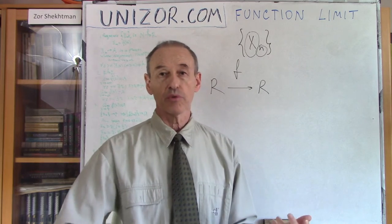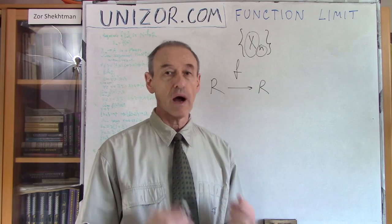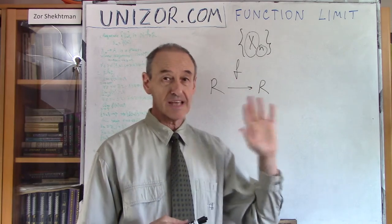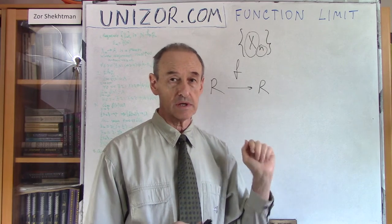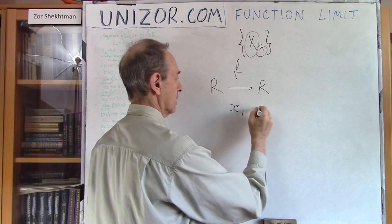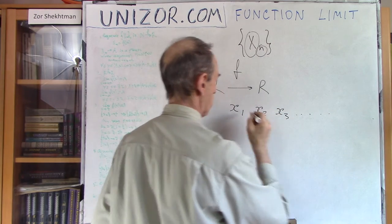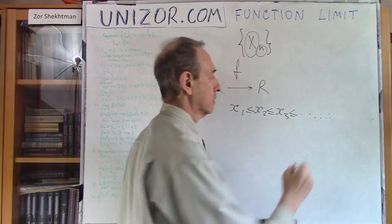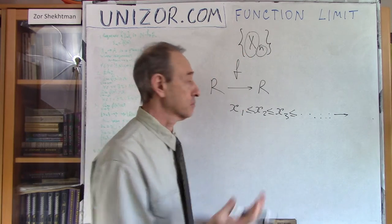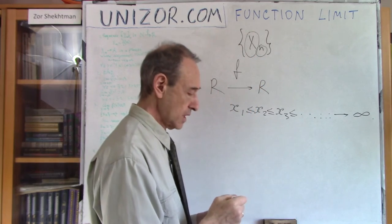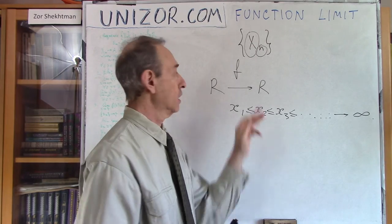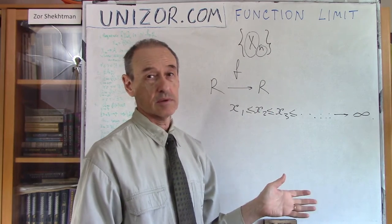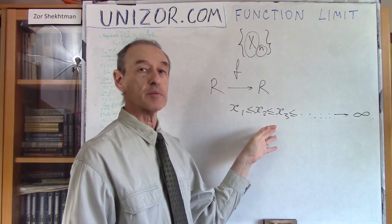The argument changes according to some rules, according to some sequence of values which the argument takes. The simplest way, which resembles exactly the situation with sequences, is to consider the process of moving our argument infinitely — making it infinitely large. If we apply this particular process to a function of real argument, then actually there is no difference between this and the sequence.